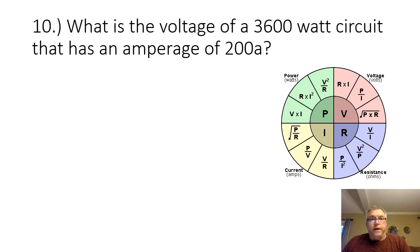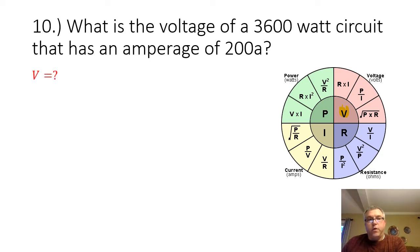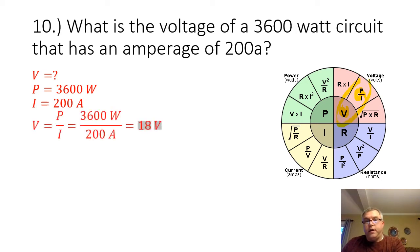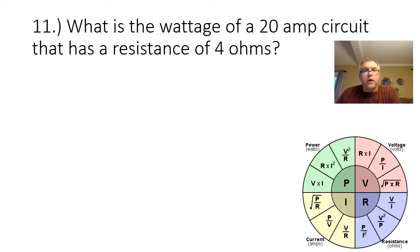Number 10: what is the voltage of a 3,600-watt circuit that has an amperage of 200 amps? We are being asked to find the voltage. We are given the power at 3,600 watts and the current at 200 amps. Our equation is V equals P divided by I. 3,600 watts divided by 200 amps equals 18 volts.